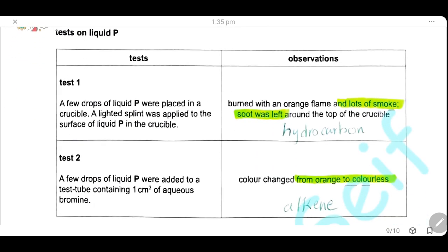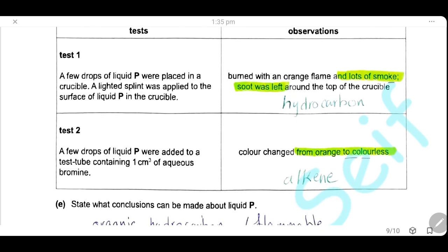Test on liquid P. Test 1. A few drops of liquid P were placed in the crucible and a lighted splint was applied to the surface of the liquid P in the crucible. Liquid P burns with an orange flame and a lot of smoke and soot was left around the top of the crucible. Burns gives a lot of smoke and a lot of soot, so it's a hydrocarbon. Test 2. A few drops of liquid P were added to test tube containing aqueous bromine. The color change from orange to colorless. This is a test for unsaturation. So this compound contains double bond and it's alkene.